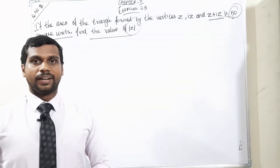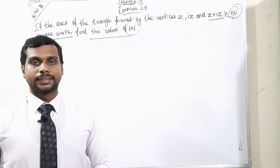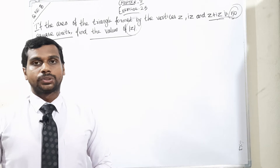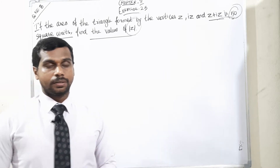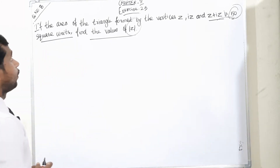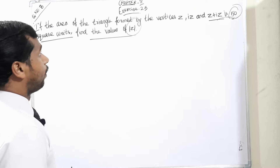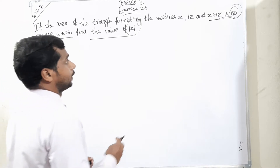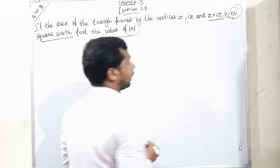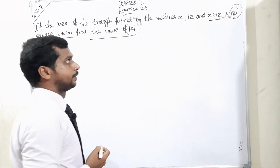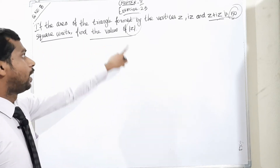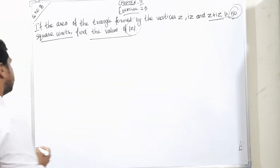Good evening everyone. Welcome to Tenimax. I am moving to exercise 2.5, question number 8. What is the question? If the area of the triangle formed by the vertices Z, iZ, and Z plus iZ is 50 square units, find the value of mod Z.